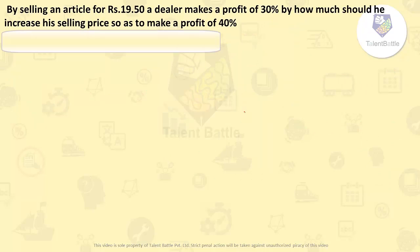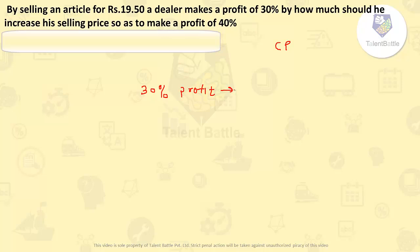Now let's check this question based on the profit-loss concept. By selling an article for rupees 19.50, a dealer makes a profit of 30%. By how much should he increase his selling price so as to make a profit of 40%? This question can be solved by two methods — finding the cost price and then calculating the selling price for 40% profit, or using a shortcut. Whenever the dealer sells at 19.50 he makes 30% profit, so for 30% profit selling price is 19.50. For 40% profit, what will the selling price be?